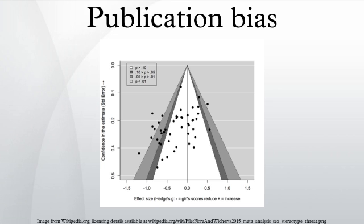Definition: Publication bias occurs when the publication of research results depends not just on the quality of the research, but on the hypothesis tested and the significance and direction of effects detected. The term 'publication bias' appears to have been first used in 1959 by statistician Theodore Sterling to refer to fields in which successful research is more likely to be published. As a result, the literature of such a field consists in substantial part of false conclusions resulting from type I errors.